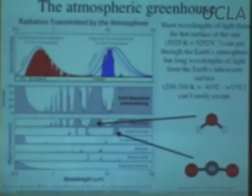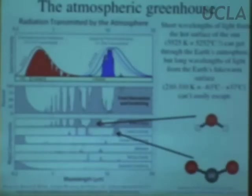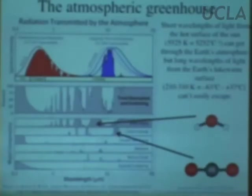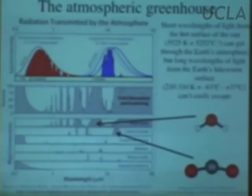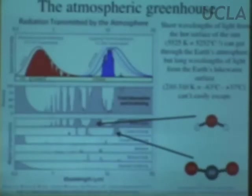CO2 and water vapor aren't the only greenhouse gases. Any gas is a greenhouse gas if it has at least three atoms or if it has two different kinds of elements. Most gases you'd think of are greenhouse gases. The exceptions are things like nitrogen, oxygen, and argon. But methane, nitrous oxide, and hydrocarbons are all greenhouse gases. They tend not to be as important simply because they're not as abundant.